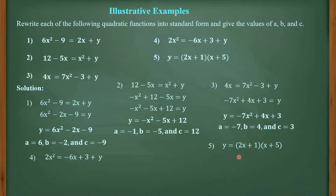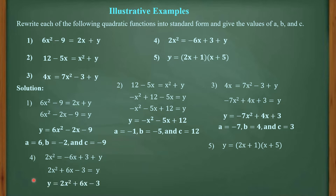For number 4: 2x² = −6x + 3 + y. Applying addition property of equality, we add +6x and −3 to both sides. Moving terms gives 2x² + 6x − 3 = y. By symmetric property, y = 2x² + 6x − 3. Thus, A = 2, B = 6, and C = −3.